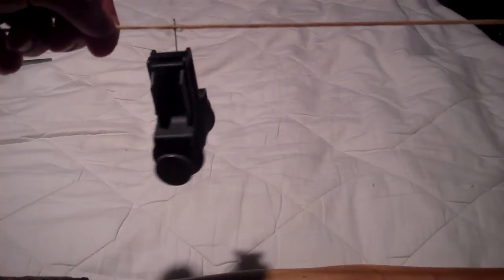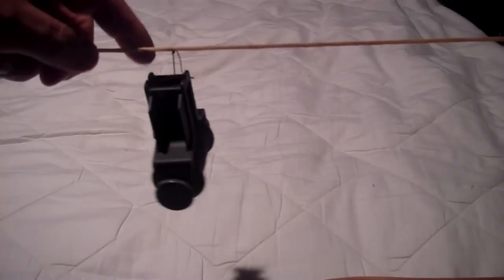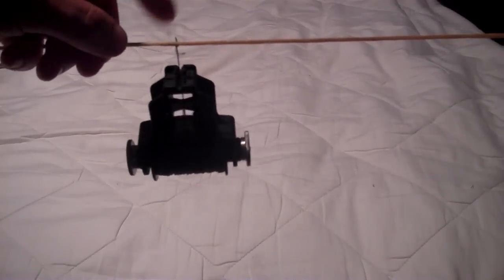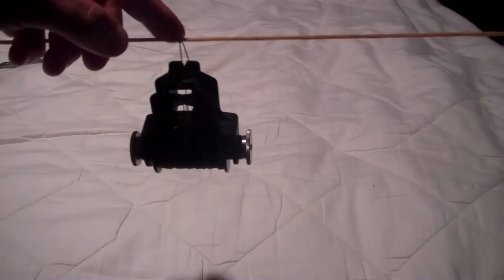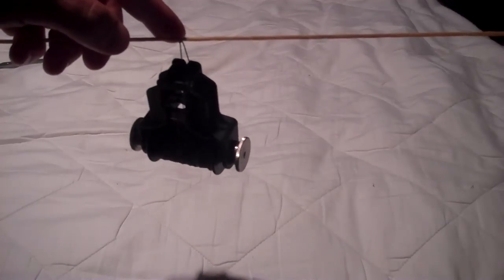Alright, so the first thing you're going to want to do is you want to mark the spot when your bow is strung where you want the serving string to start.